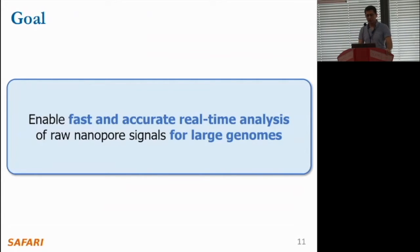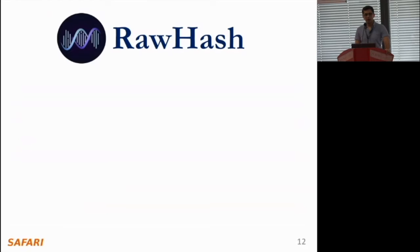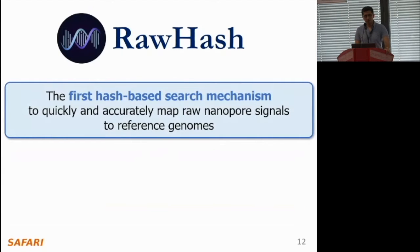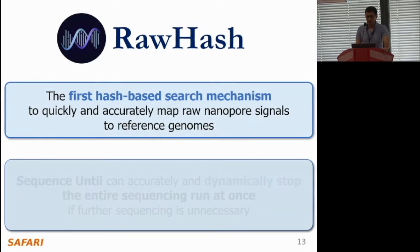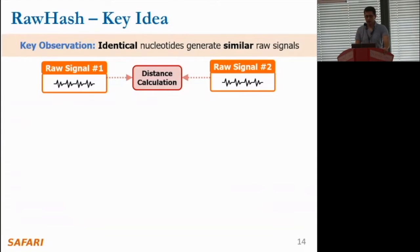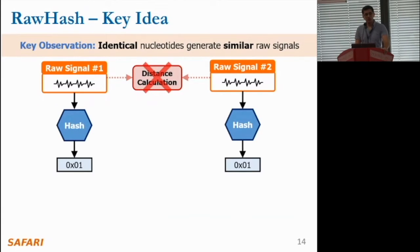Our goal is to enable fast and accurate real-time analysis of raw nanopore signals for large genomes. To this end, we propose RawHash. We make two key contributions: first, the first hash-based search mechanism to quickly and accurately map raw nanopore signals for large genomes; second, a novel technique called Sequence-Until that can dynamically and accurately stop the entire sequencing run if further sequencing is unnecessary. The key observation in RawHash is that identical nucleotides generate similar raw signals. One way to identify these similarities is to calculate the distance between them as Sigmap does, but this becomes too slow for large genomes.